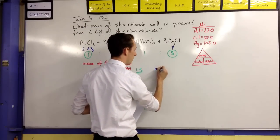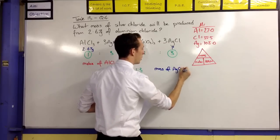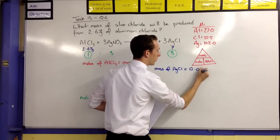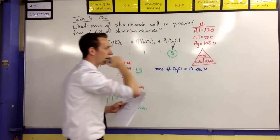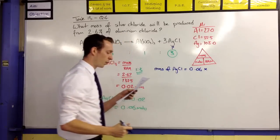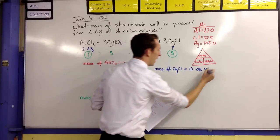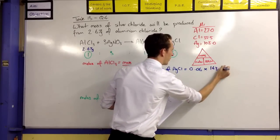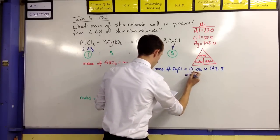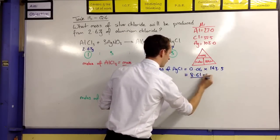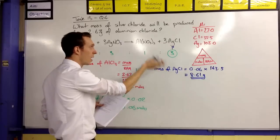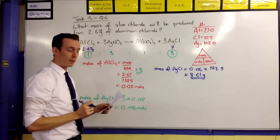So we want to know the mass. The mass of silver chloride is going to be equal to the number of moles, which is 0.06, times by its relative atomic mass. Which again, we can work out. Silver is 108. Chlorine is 35.5. And when we do that, that's 143.5. And then when we times that out, we get 8.61 grams of silver chloride. So that's the mass. That's the answer. That's the mass of that produced from 2.67 grams of that.